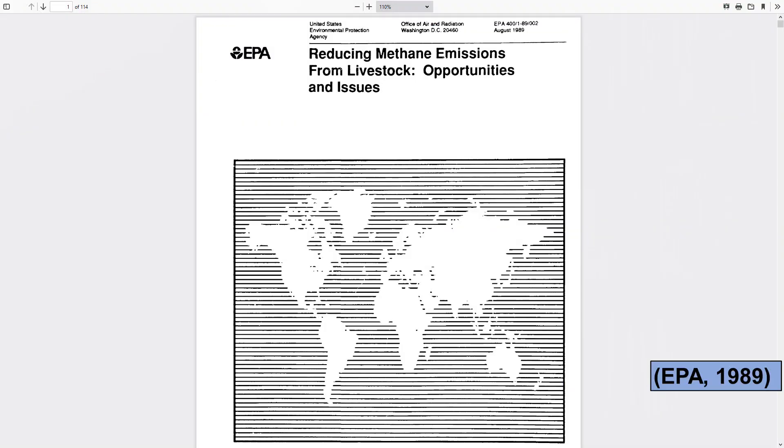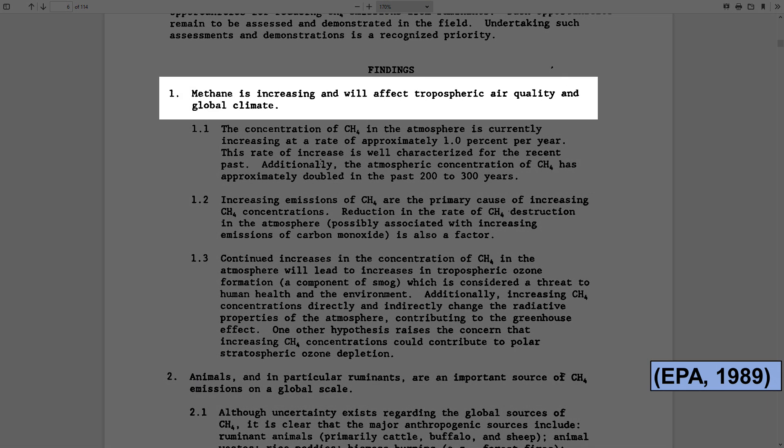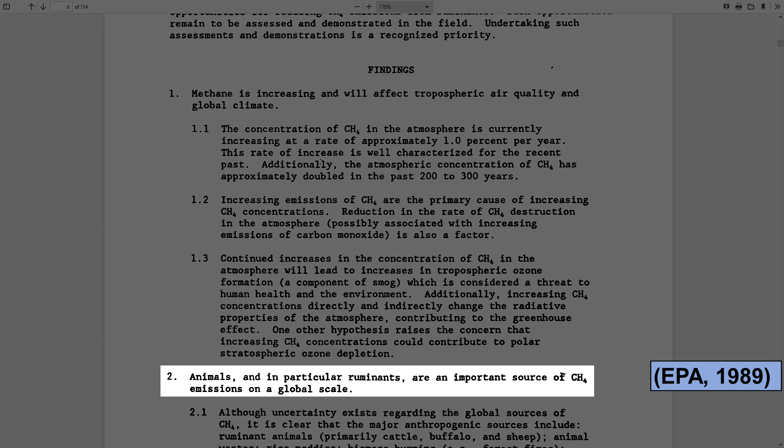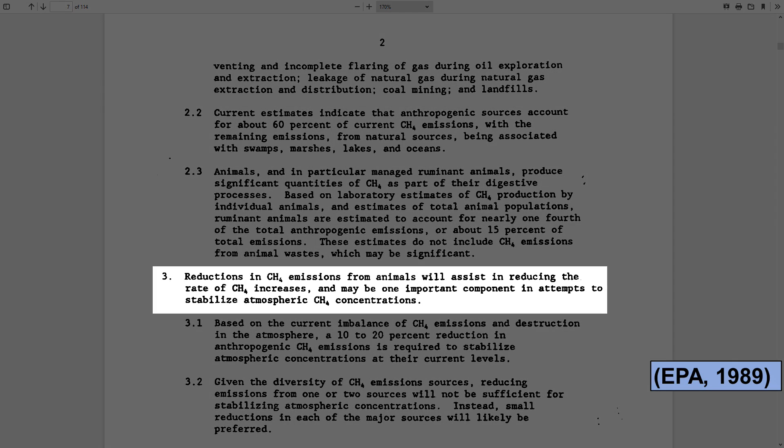Here we even see an EPA report from all the way back in 1989 which states: methane is increasing and will affect tropospheric air quality and global climate. Animals and in particular ruminants are an important source of methane emissions on a global scale. Reductions in methane emissions from animals will assist in reducing the rate of methane increases. So no, the FAO's 2006 report is not what started people being concerned about the link between emissions from livestock and global warming.